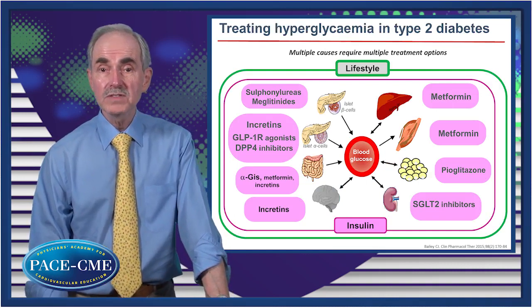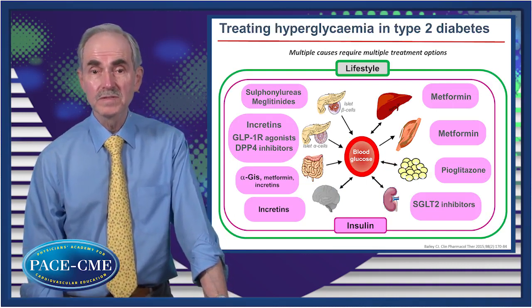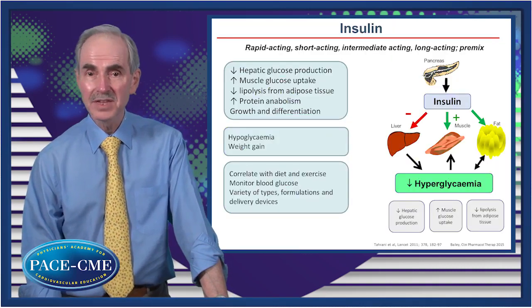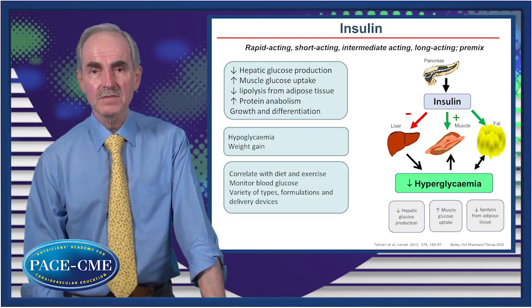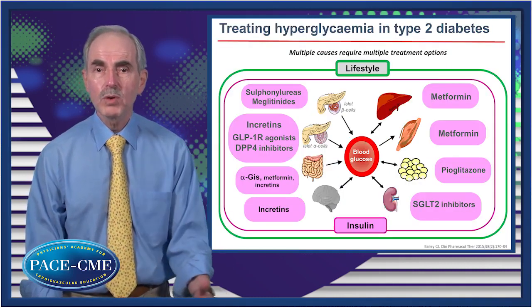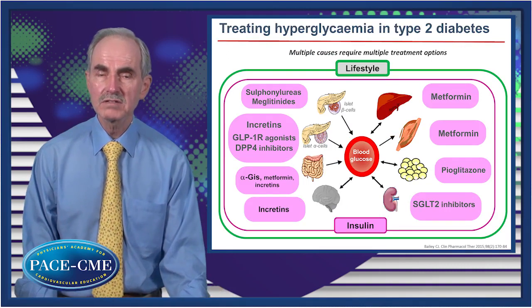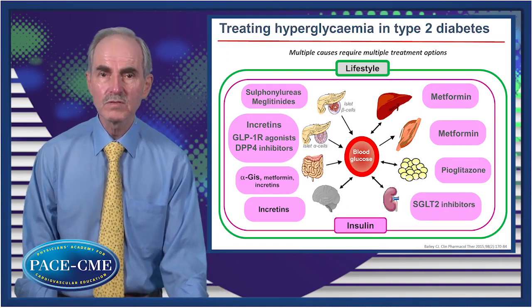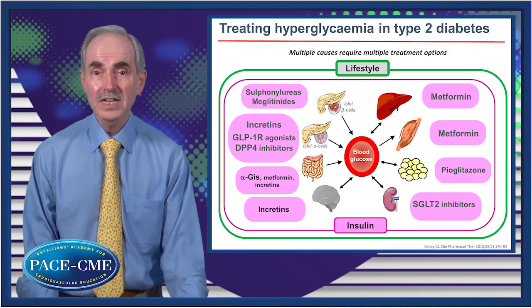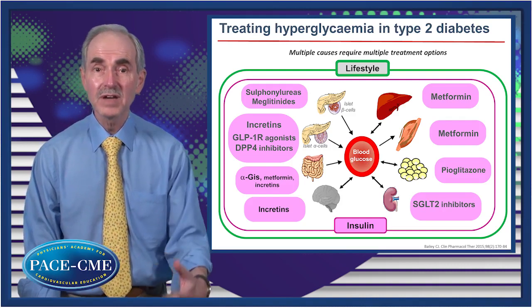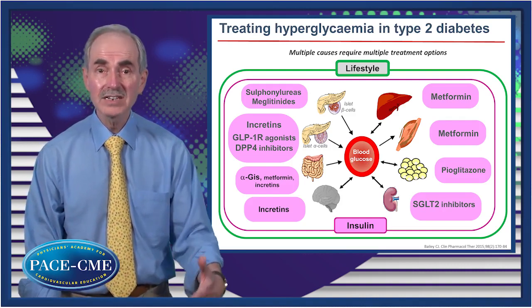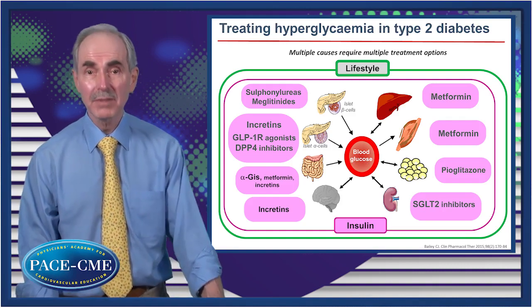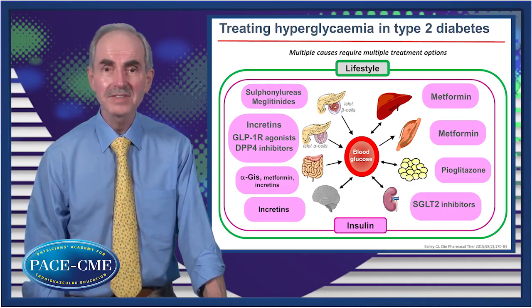If we are unable to achieve the glycemic control we want with any or all of those agents, we can turn to insulin. Insulin is able to address many of the defects that occur in type 2 diabetes. Hyperglycemia in type 2 diabetes is the result of multiple factors, and therefore we need multiple therapies to get glucose as close to normal as possible, as soon as possible, in order to defer or prevent microvascular complications. Thank you, I hope you've enjoyed it.